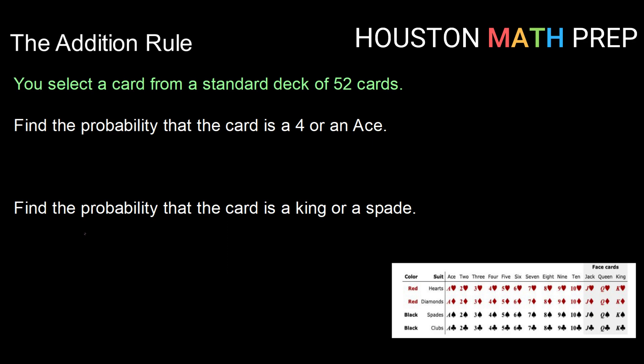We want to find the probability that the card is a 4 or an Ace. Whenever we see the term 'or' in probability, we know we're using the addition rule. Which version of the addition rule depends on whether or not our events are mutually exclusive.